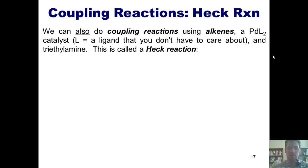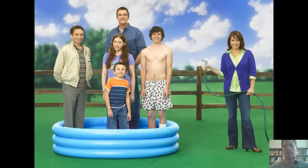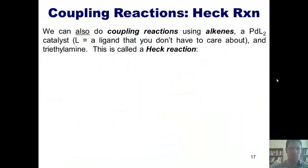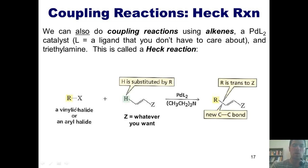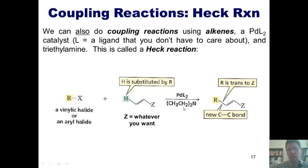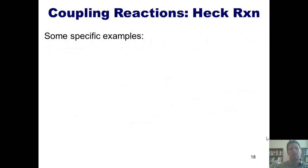The next coupling reaction in our lineup involves taking an alkene, a palladium L2 catalyst, and triethylamine. This type of reaction is called a Heck reaction — and no, that isn't supposed to be G-rated profanity. It's named after somebody whose last name was Heck. I take a vinyl or an aryl halide, where the R group must be an sp2 hybridized carbon in a carbon-carbon double bond or in a benzene ring — it can't be an sp3 carbon for the Heck reaction. I react it with an alkene, treat with palladium L2 and triethylamine, and the hydrogen or alkyl group is replaced by the vinyl or aryl group, giving an alkene product where R and Z are always trans to each other.